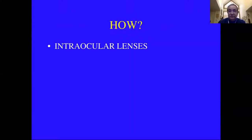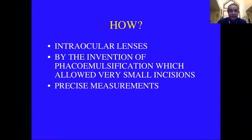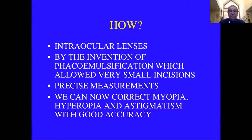How does this work? First, intraocular lenses move the optical correction from in front of the eyes to inside, at the natural spot where the natural lens was. And the invention of phacoemulsification allowed us to use very small incisions with very little induced astigmatism and quick healing. We developed precise measurements — fifty years ago we had no way to measure what power lenses to use. Now with phacoemulsification, intraocular lenses, and precise measurements, we can correct myopia, hyperopia, and astigmatism, usually with good accuracy.